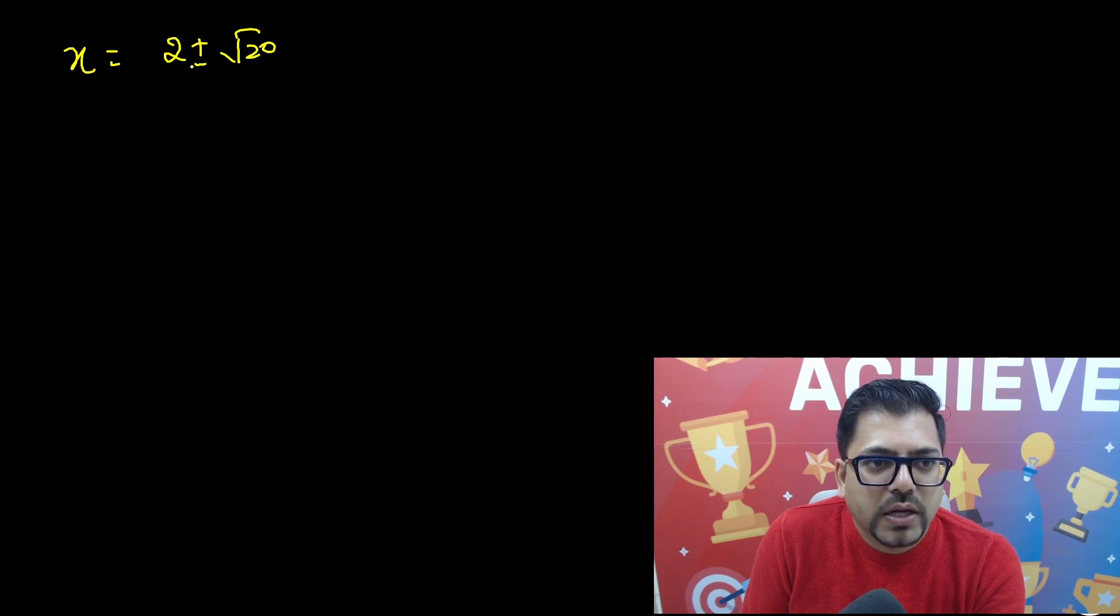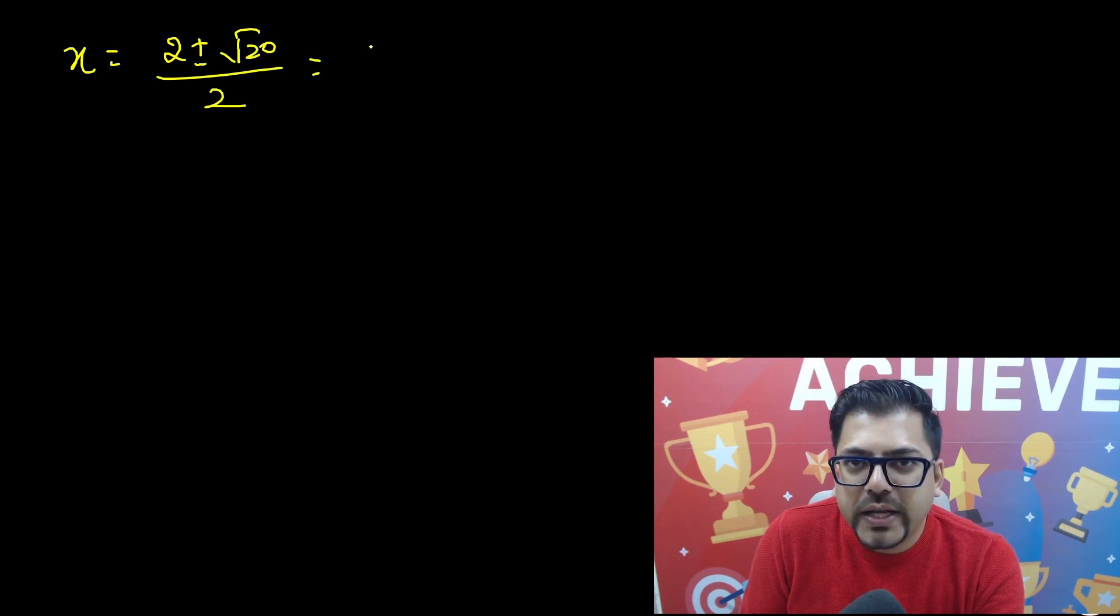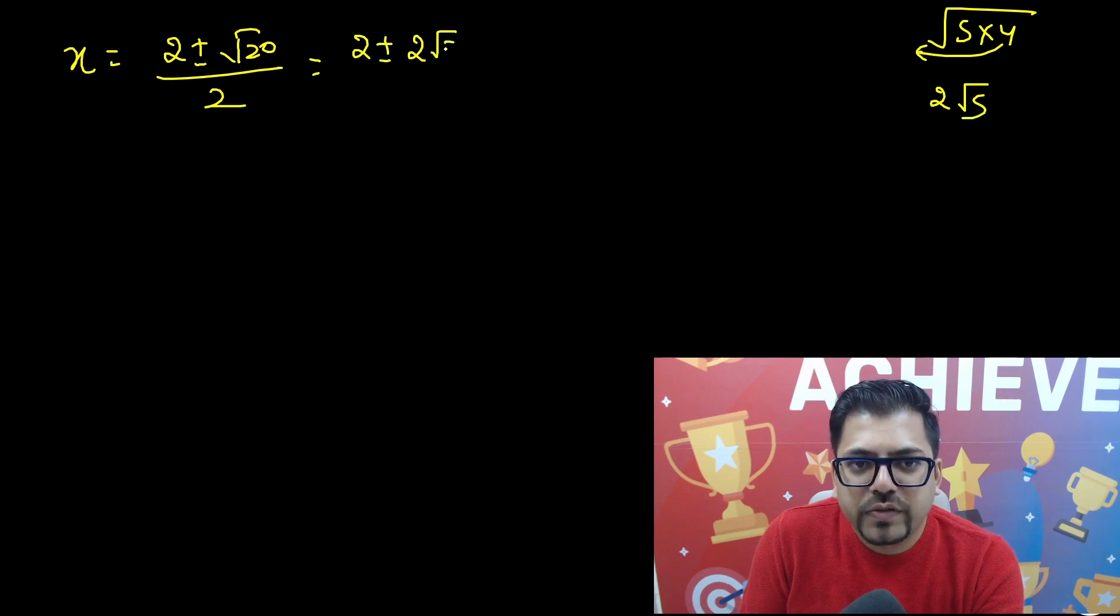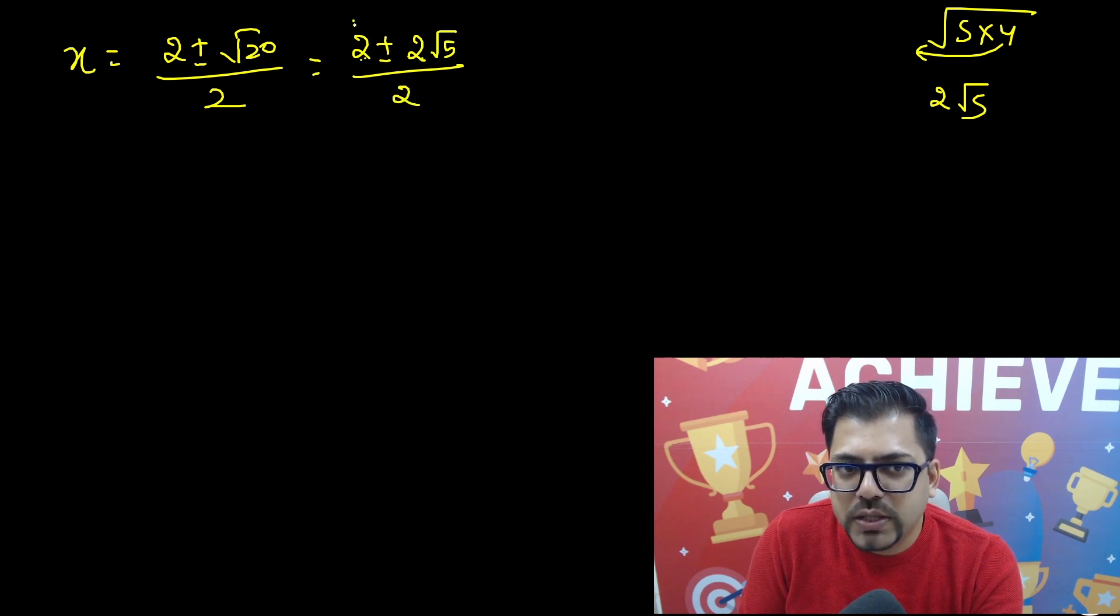So let's write it in the next slide. So we have got x is equals to 2 plus minus root over 20 divided by 2, and 20 can surely be written as 5 into 4. So 5, 4s are 20, and the root of 4 will come out, it will become 2 root 5. So you have 2 plus minus 2 root 5 for 20 and whole divided by 2. Now 2 will cancel both the 2s in the numerator. So you'll have 1 plus minus root 5.